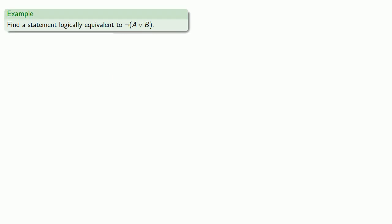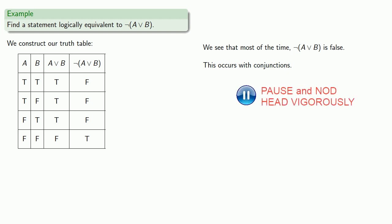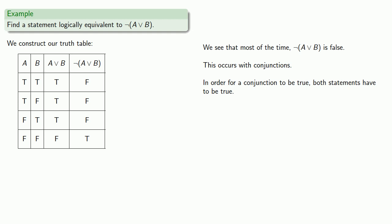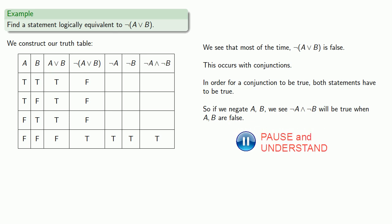To begin with, let's see if we can find a statement logically equivalent to the negation of the disjunction a or b. Let's construct our truth table. We see that most of the time, the negation of a or b is false, and this occurs a lot of times with conjunctions — in most cases, conjunctions will be false. Now in order for a conjunction to be true, both statements have to be true. So here we see that if this is going to correspond to some sort of conjunction, the only time it's true is when a and b are both false, meaning the two statements have to be not a and not b. So if we negate a and b, we see that not a and not b will be true when a and b are false. And so the negation of a disjunction looks to be the conjunction of the negations.